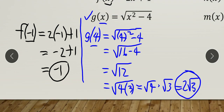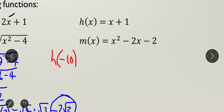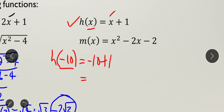Next, we use the h(x) function. h(x) is a linear function, so it is continuous everywhere — you can take any real number as the argument. For example, h(-10): negative 10 is our argument and x value. Substituting into h(x) = x + 1, we get -10 + 1, which equals -9. Negative 9 is our function value.